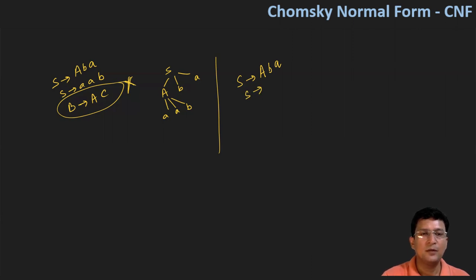So this is not S, this is let's say A, so A produces small a, small a, and B. So we have to convert this to Chomsky normal form.